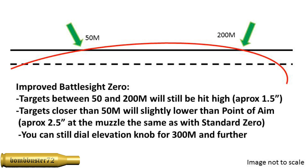Targets that are closer than 50 meters are going to be still again slightly lower than our point of aim. Again, this shouldn't be any more than two and a half inches though, because the muzzle and the sights are still the same distance apart. The great thing about the improved battle sight zero, we still have a setting that we can adjust to for 300 meters, 4, 5, and 600 meters. Those settings will stay the same, and we can still dial it in for those distances.